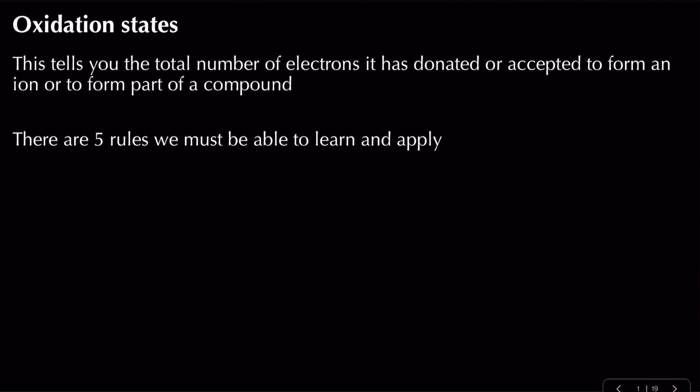In this video we're going to be looking at oxidation states and how we can assign oxidation numbers. Oxidation states are different to charges, but in some ways similar. Oxidation states tell you the total number of electrons that have been donated or accepted to form an ion or part of a compound.